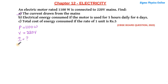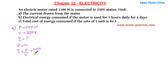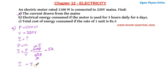The formula connecting power, voltage, and current is P = VI. So I will be power divided by voltage. Power given here is 1100, voltage given here is 220, so the current is 5 ampere. The current drawn from the mains is 5 ampere. This is your first part answer.